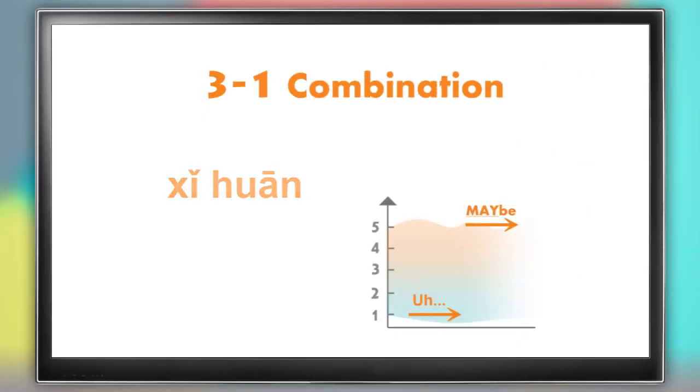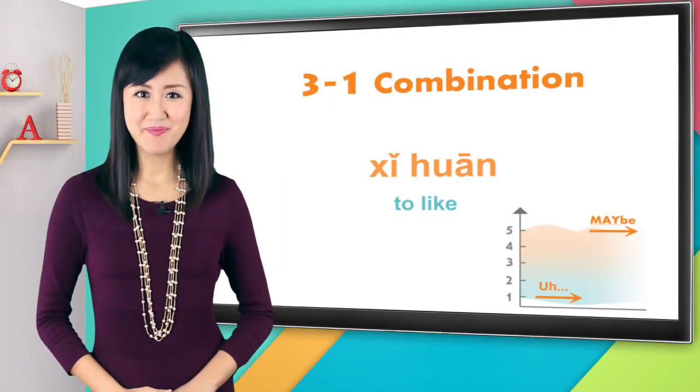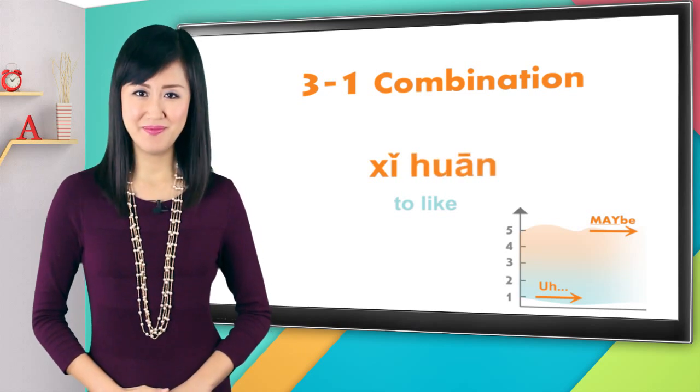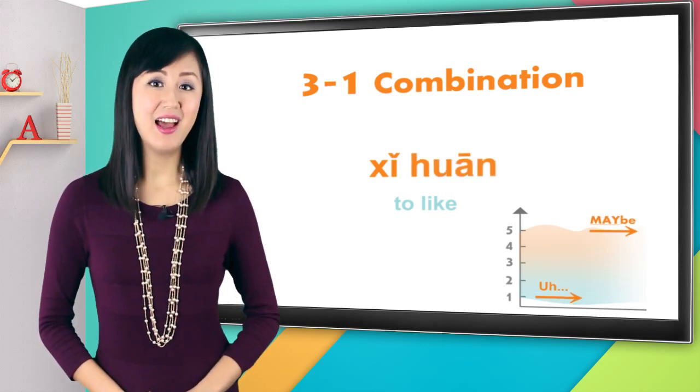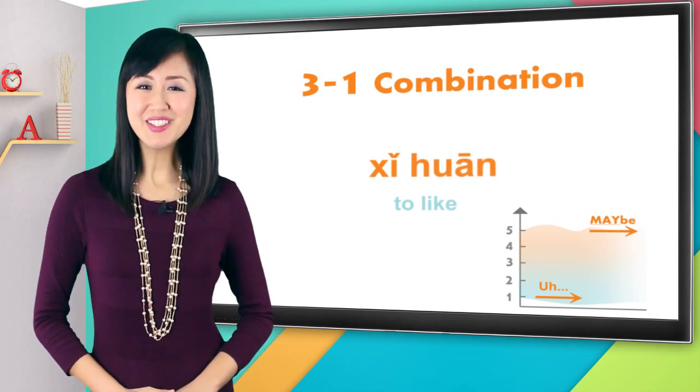The Chinese word to remember is xǐ huān, a mei, xǐ huān, a mei. Xǐ huān means to like, say it with me, xǐ huān, a mei, a haa, xǐ huān, great.